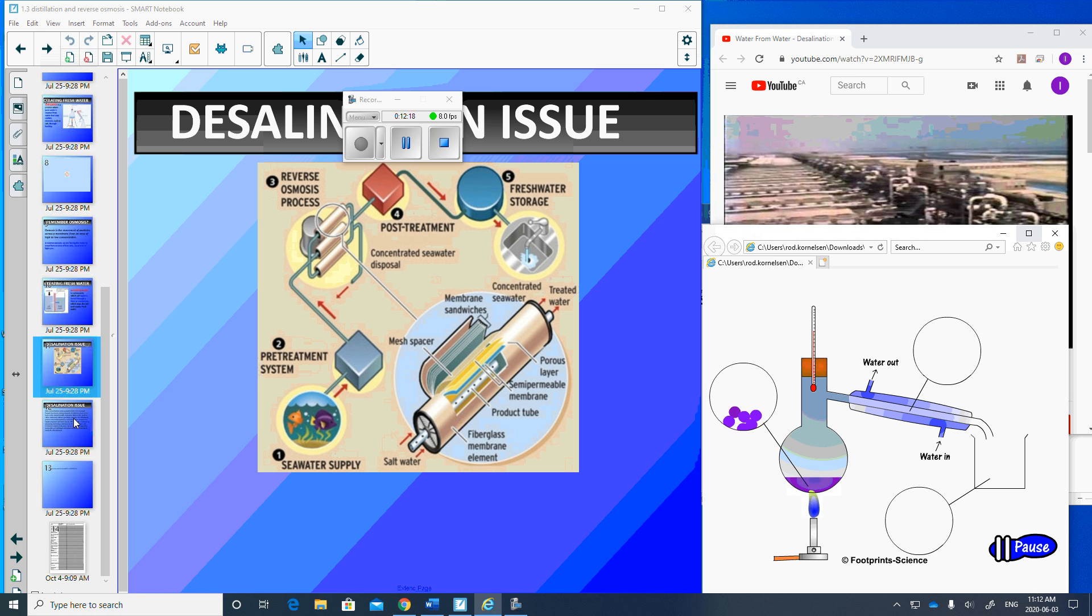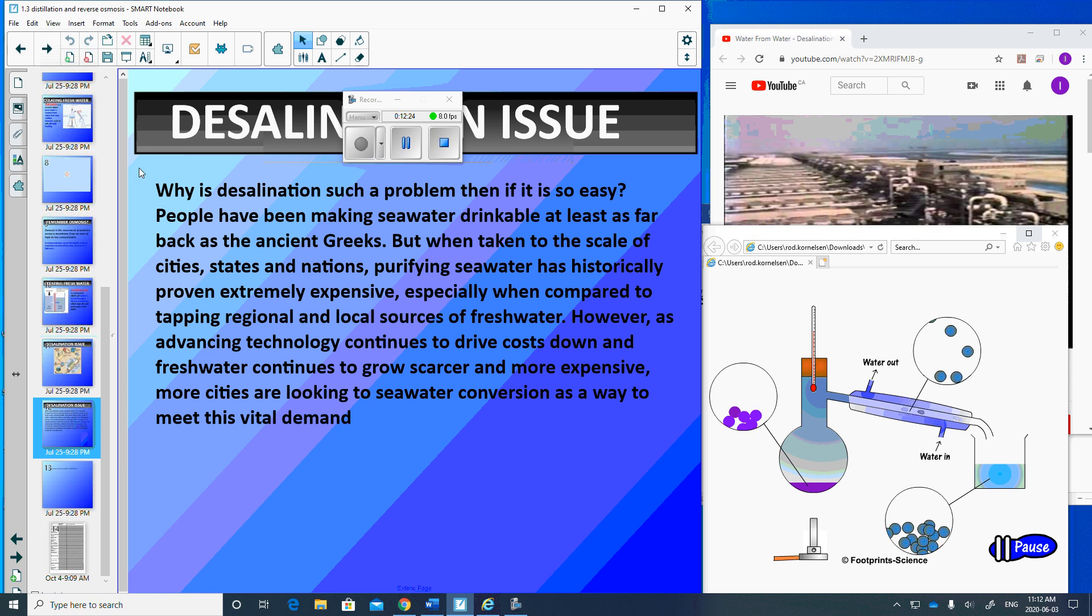So how did you do with your list of 15 most important things? First, one quick question. Why is desalination such a problem? If it's so easy, people have been making seawater drinkable for at least as far back as the ancient Greeks. But when taken to the scale of cities, states and nations, purifying seawater has historically proven extremely expensive, especially when compared to tapping regional and local sources of fresh water. However, as advancing technology continues to drive costs down, the fresh water continues to grow more and more scarce. More cities are looking to seawater conversion as a way to meet this vital demand.